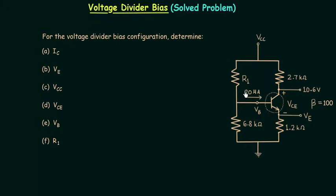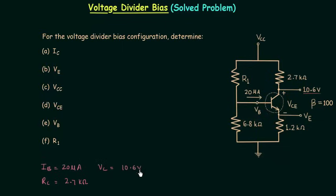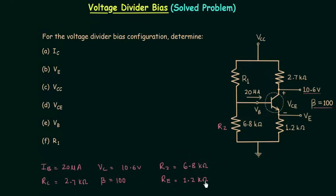The parameters given in the problem are: base current IB equal to 20 microamps, resistance RC equal to 2.7 kilo ohms, potential at the collector terminal VC equal to 10.6 volts, beta equal to 100, resistance R2 equal to 6.8 kilo ohms, and resistance RE equal to 1.2 kilo ohms.